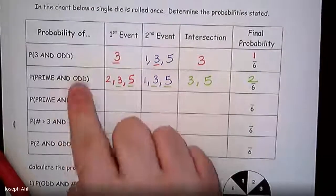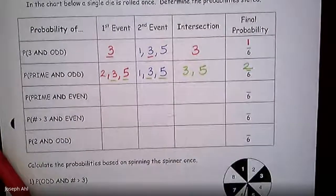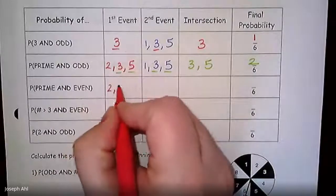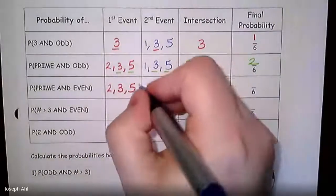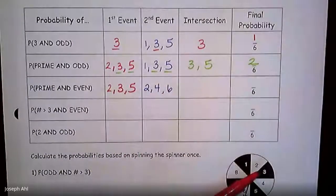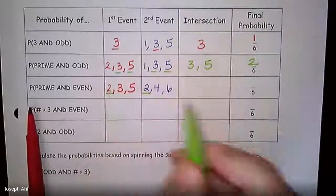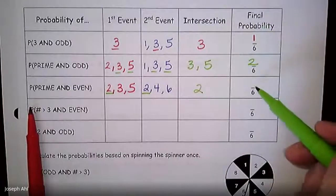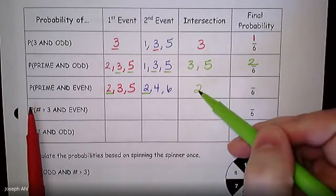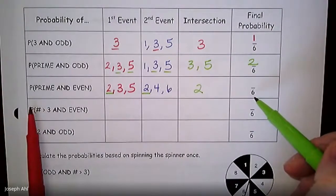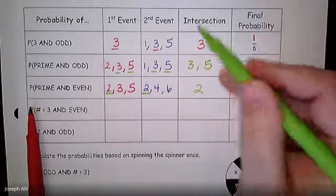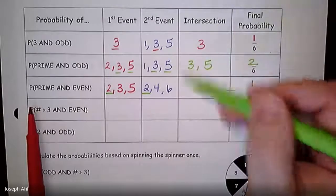Moving on to prime AND even: prime numbers are 2, 3, 5, and even numbers on the die are 2, 4, 6. Looking for the overlap between these two groups, I'm only seeing one item — the number 2 is the only overlap. Don't be fooled by what intersection means versus the probability. There's only one number, the number 2, out of the six options that results in having both a prime and even, so the probability is 1 out of 6.